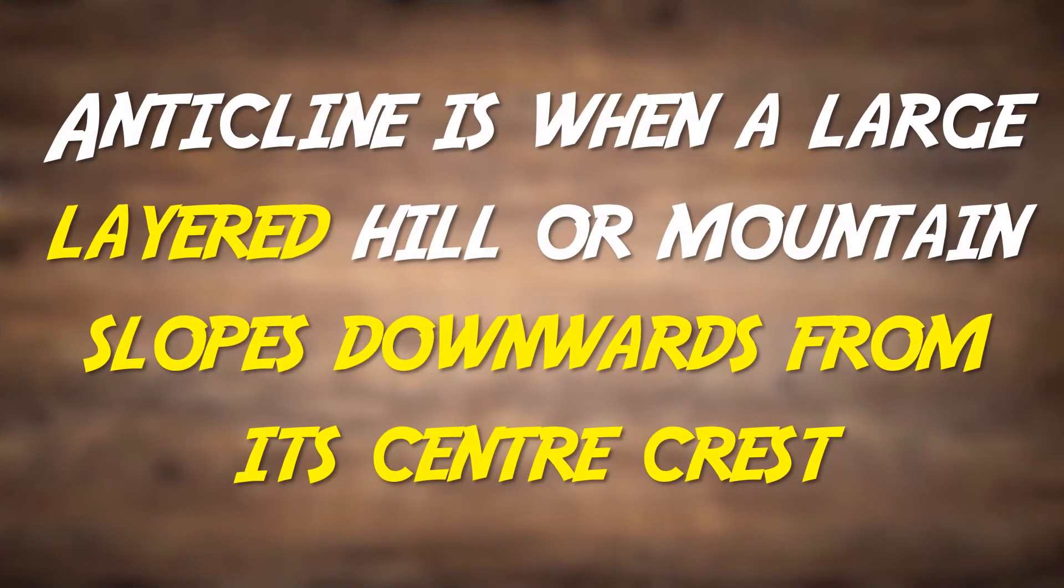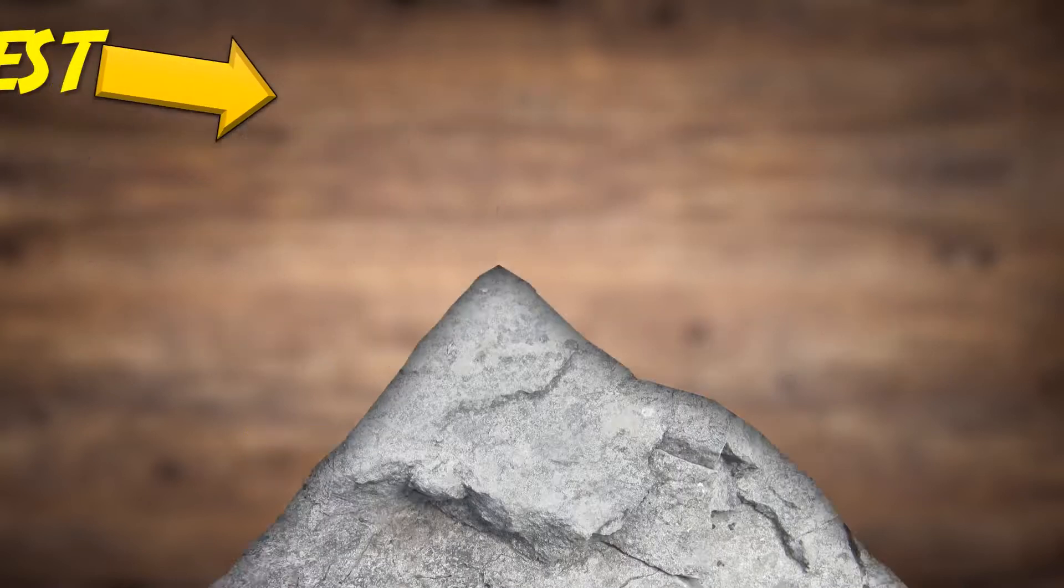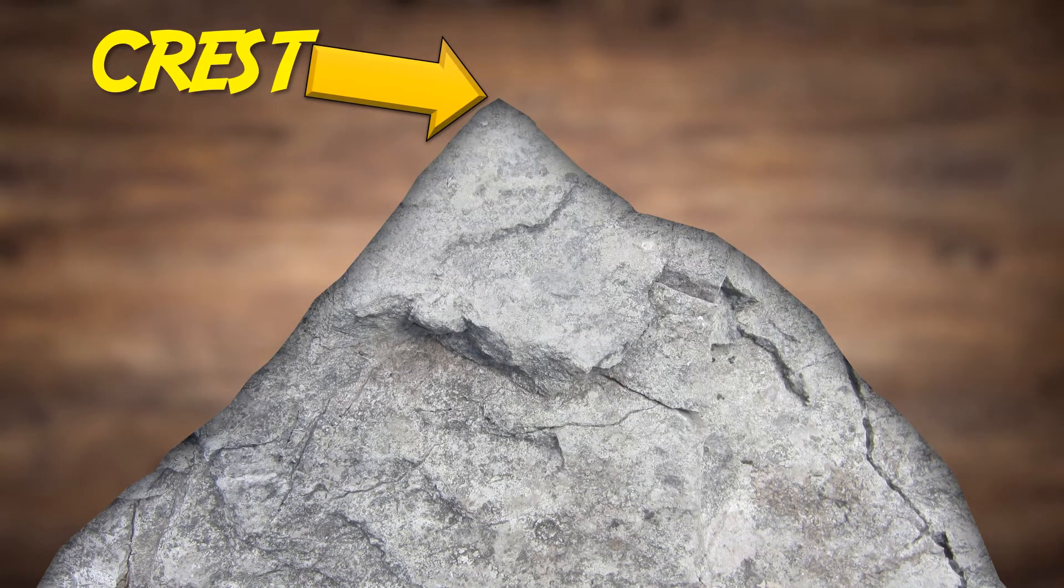Anticline is when a large layered hill or mountain slopes downwards from its center crest. First, the crest is the highest point of a hill or mountain.